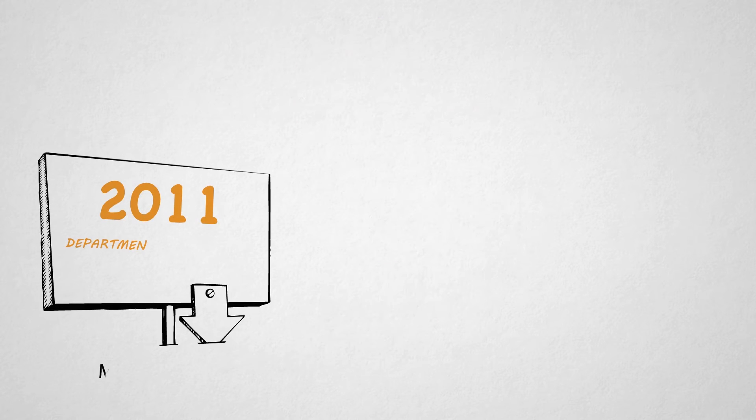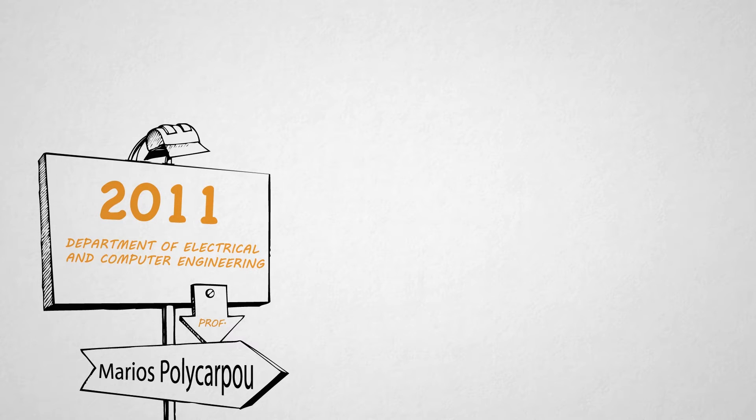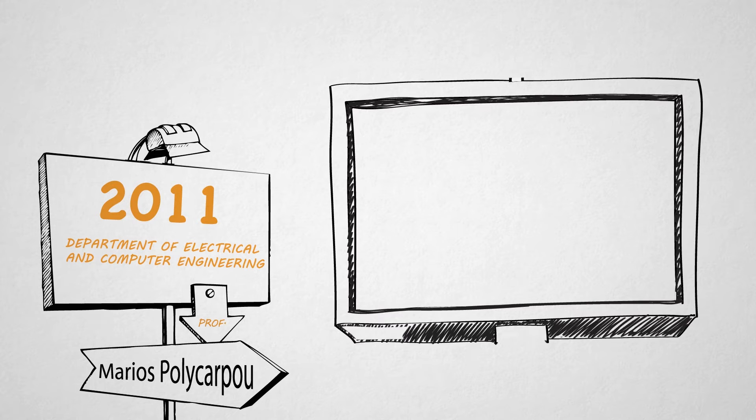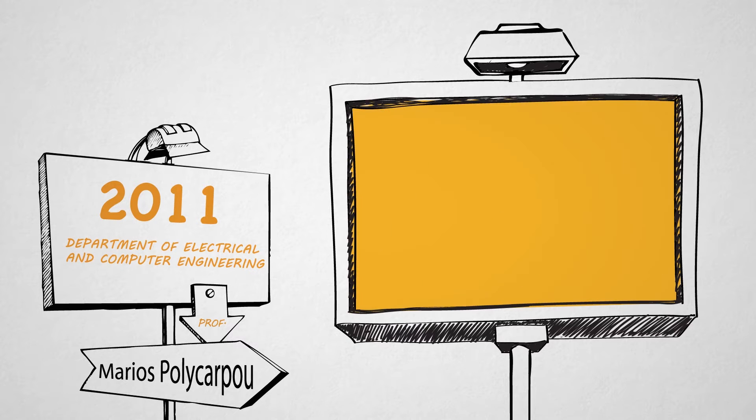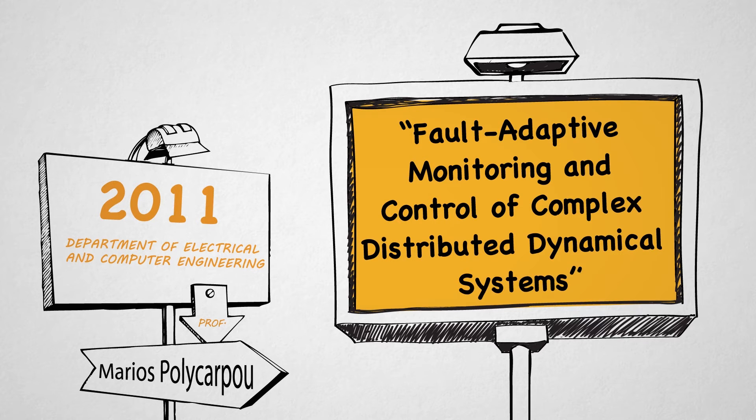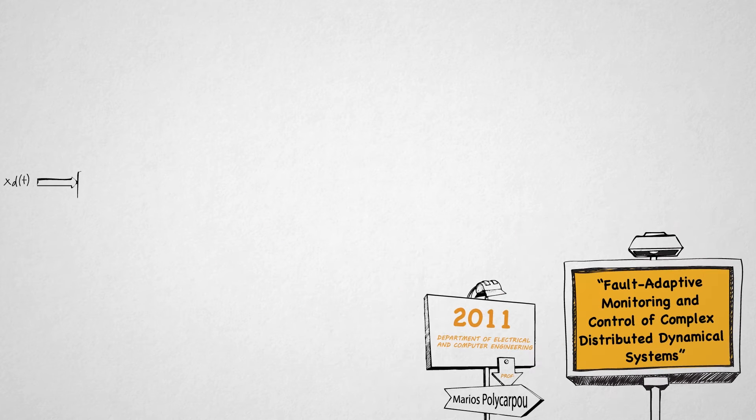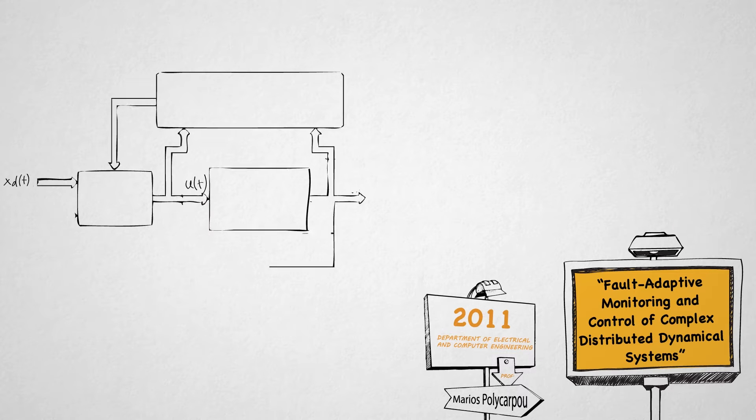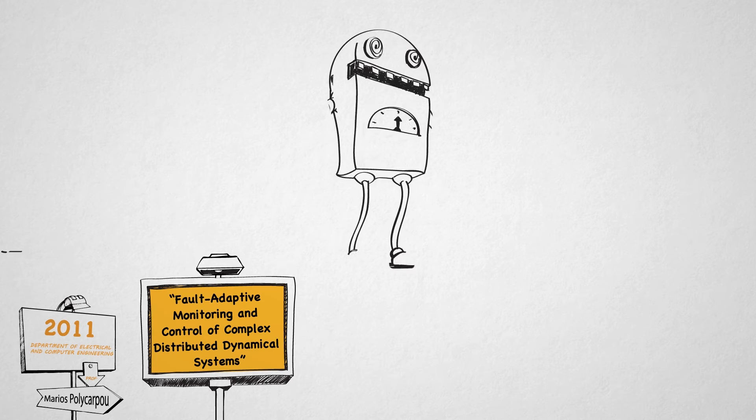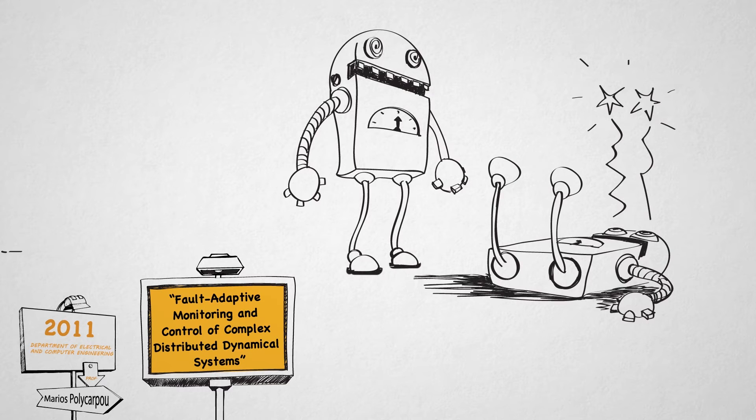In 2011, Professor Marios Polycarpou, director of the KIOS Research Center for Intelligent Systems and Networks, was awarded an ERC Advanced Grant of more than 2 million euros to design intelligent algorithms that will be able to process complex data in real time in order to detect promptly and accommodate any small faults before they become major failures.